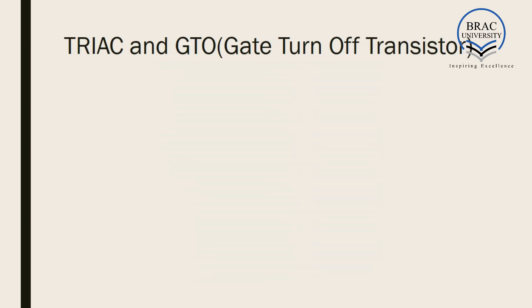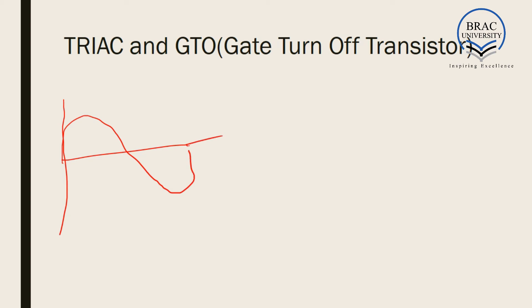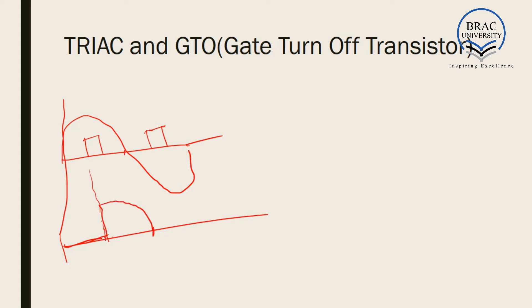We have learned all we need to about SCR. Now, a brief discussion on TRIAC and GTO. SCR only works in the positive cycle, but TRIAC works in the negative cycle as well. If we provide gate pulses at appropriate points, the output voltage follows the input during the positive half cycle just like a regular SCR. But in the negative half cycle, when a gate voltage is applied, we also get an output voltage in the negative direction — unlike SCR where the output would have been zero. That is the difference between a basic TRIAC and an SCR.